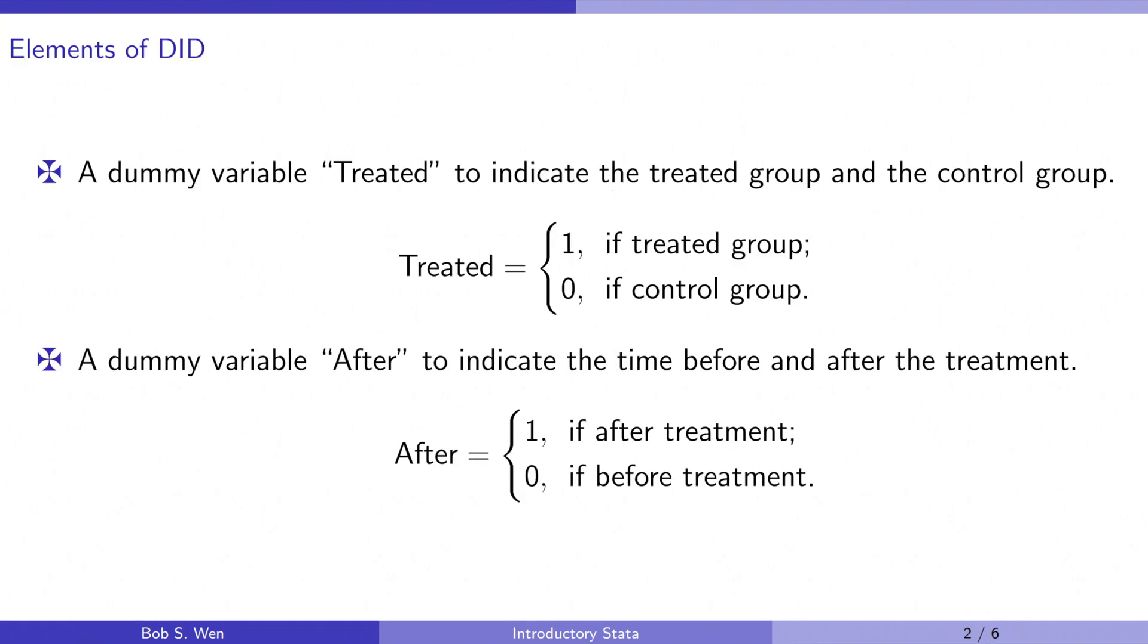Let's take a look at the elements of difference in differences. In the standard difference in differences setup, we have two groups of people: the treated group and the control group. The treated group receives some kind of treatment, such as a government policy, a change in medication, or any other intervention of interest. The control group is not exposed to the treatment.